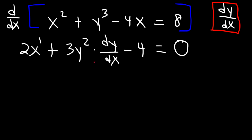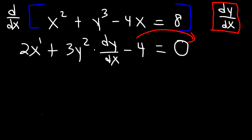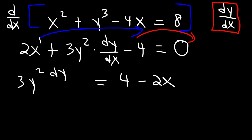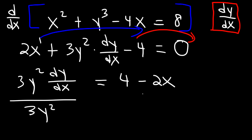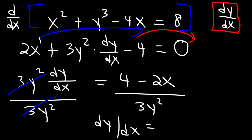Our goal is to isolate dy over dx — we need to get it on one side of the equation. So we're going to move the negative 4 from the left side to the right side, where it becomes positive. And let's do the same with 2x — once you move it to the right side, it's going to become negative 2x. Our next step is to divide both sides by 3y squared, and this will cancel.